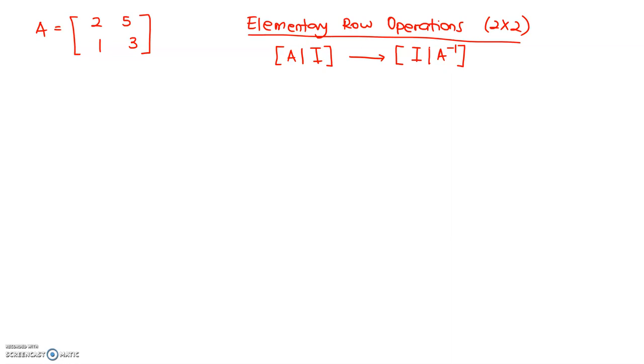So, elementary row operation is actually one of the methods in order to obtain the A inverse. This is our aim up here. We want to have our A inverse.